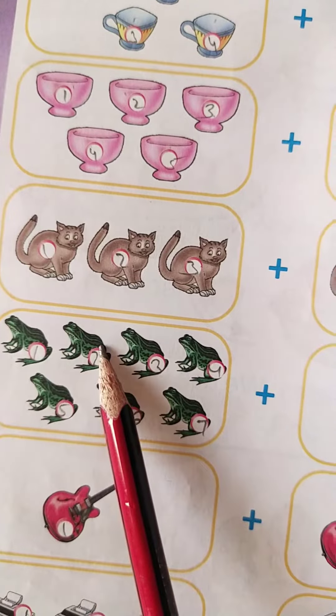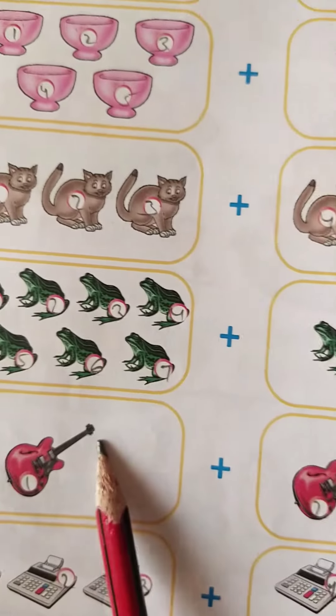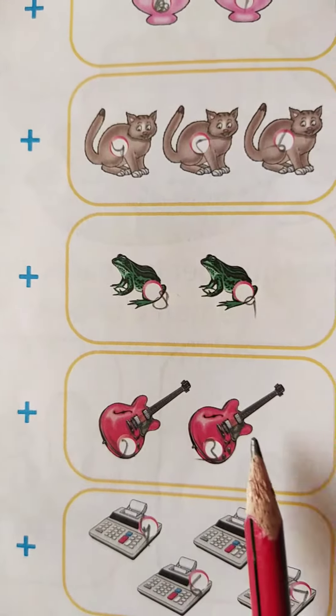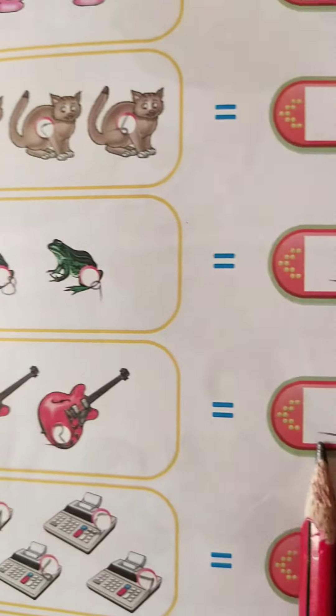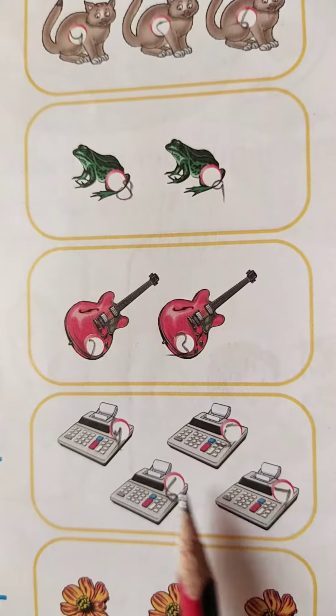And now here 1, 2, 3, 4, 5, 6, 7, 8, 9. So you will write 9 here. And here only 1 and here 1, 2. So here 1, 2, 3. So you will write 3 here. And here 1, 2, 3, 4, 5, 6, 7. So you will write 7 here.